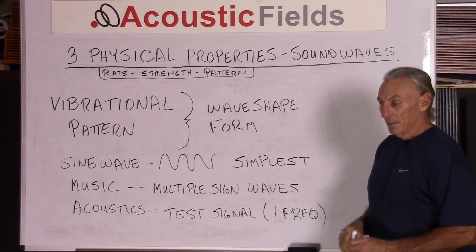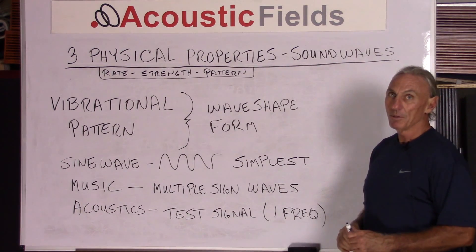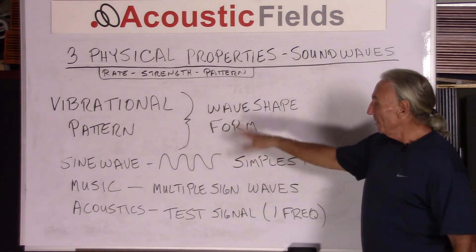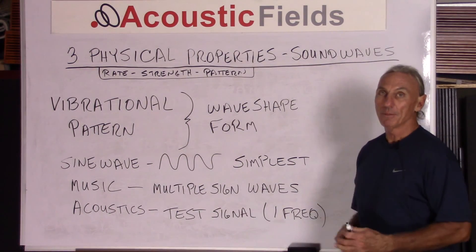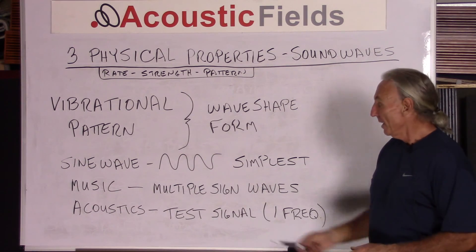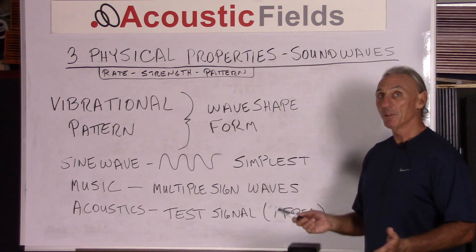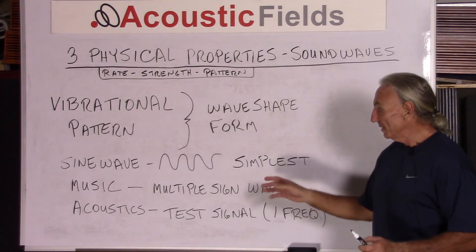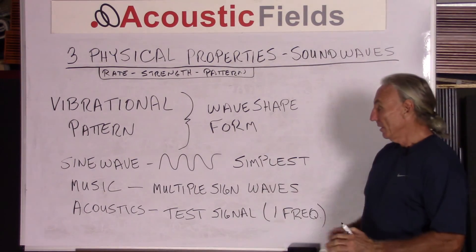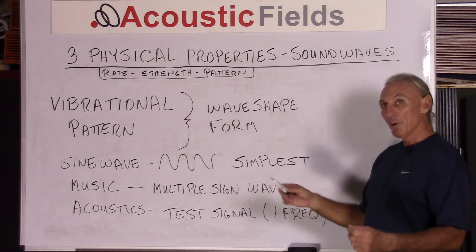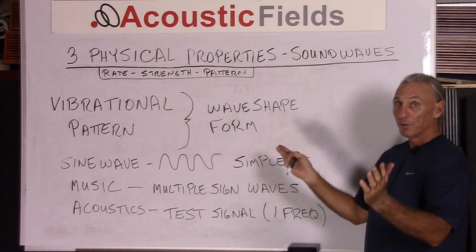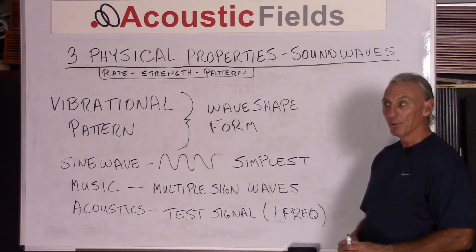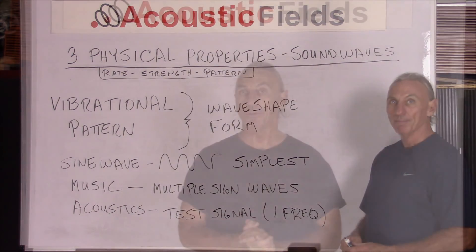Going back to our comparison between acoustics and music for understanding: in music, what is music? Music is multiple sine waves — many, many different sine waves combined to produce music. In acoustics, what is a sine wave? It's really a test signal for us. So there's your difference: one uses multiple sine waves to produce something, and we are testing for that multiplicity using just one frequency. We'll talk more about that in a future video.